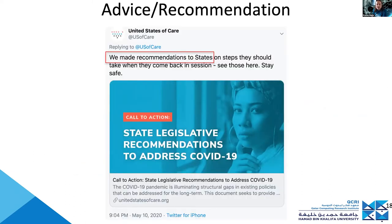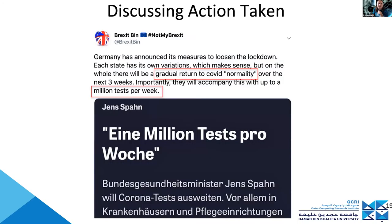Our annotation schema also pays attention to positive things — things that might inform the general public or policymakers, because there's a lot of good advice in social media. For example, a tweet with recommendations to states about how to reopen. There's also discussion of actions taken by other countries, which might be interesting to policymakers, journalists, and society as a whole.